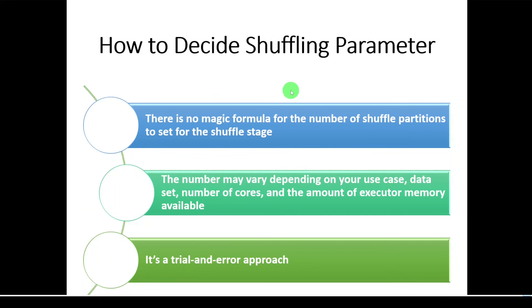How to decide shuffling parameter? Do we have any magic number to set a shuffling parameter? No, there is no magic number to set shuffling parameter. Shuffling parameter differs use case to use case, and also it differs based on many factors such as your use case, data set, number of cores, and the amount of executor memory available. These are the few factors deciding the shuffling parameter, and it is purely trial and error approach. It's totally depending on your use case.